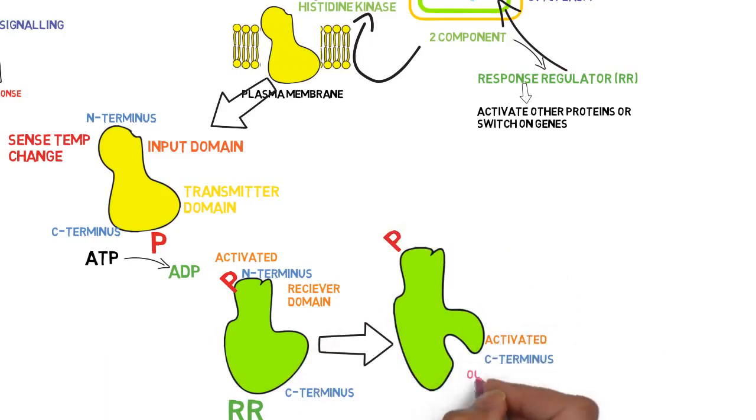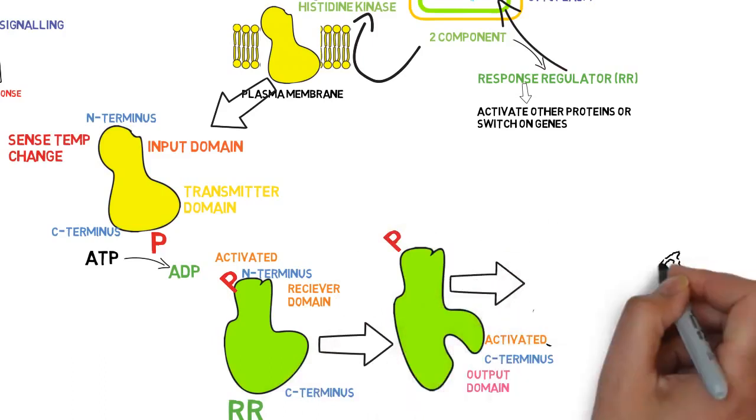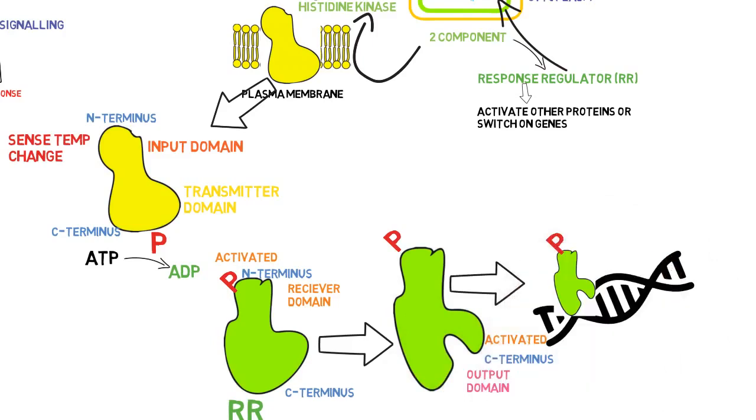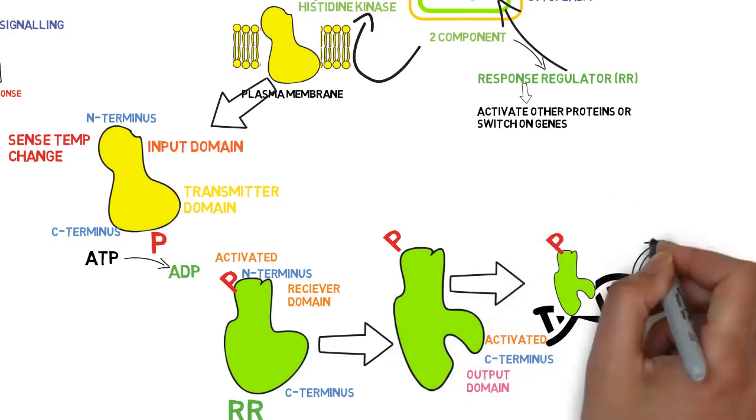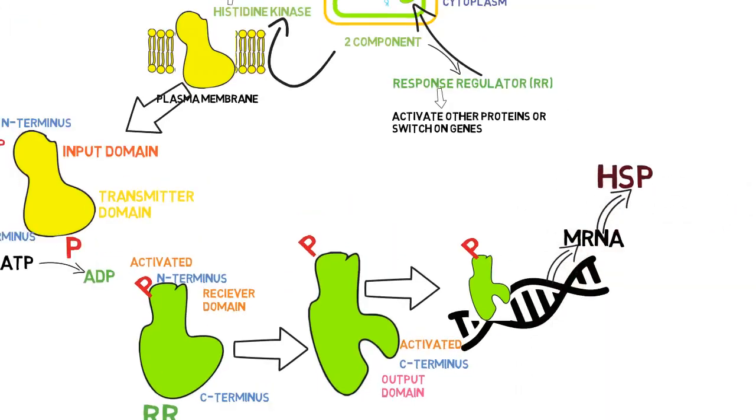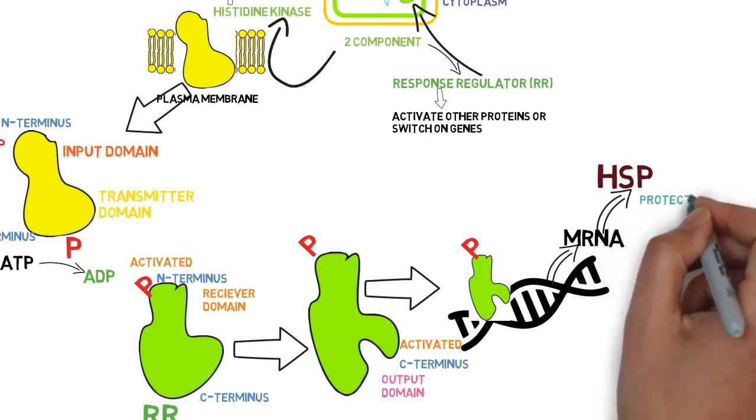Now it is ready to stimulate other proteins or may bind to the DNA. When it binds to DNA, it starts the process of transcription and later translation for the production of special proteins called heat shock proteins. These heat shock proteins act as heat absorbers for the bacteria and are responsible for its survival in hot environmental conditions.